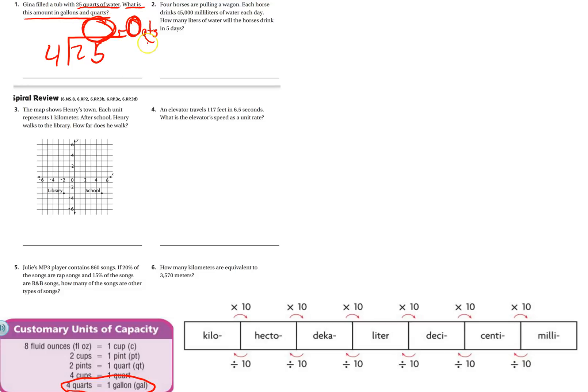Okay, so your gallons are going to be here, your remainder is your quarts. I'll let you go ahead and do the math, but again, if you need any help, please raise your hand. Four horses are pulling the wagon. Each horse drinks 45,000 milliliters of water each day.